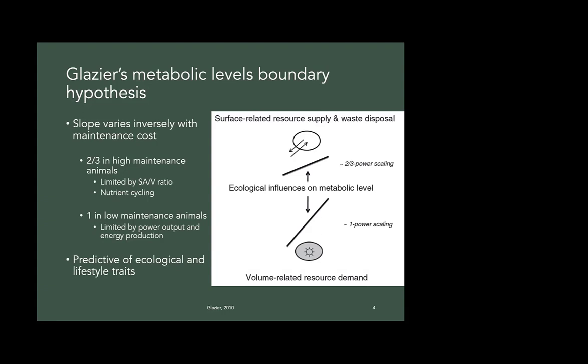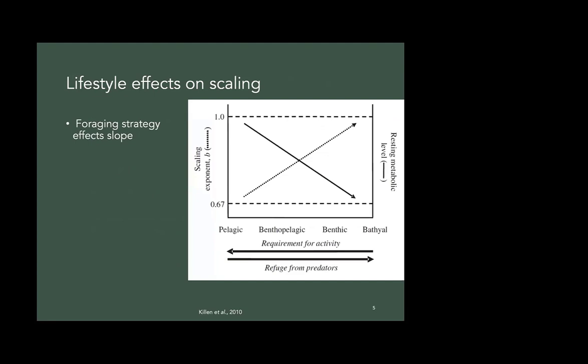And so this is predictive of ecological and lifestyle traits. Killen et al. in 2010 looked at a bunch of fish species and looked at foraging strategy and how it affects slope. So this graph has the scaling exponent, which is B here and the resting metabolic level. And in highly active fish or pelagic fish like tuna, they scale down here at the scaling exponent at 0.66 or 0.67, and they have a high resting metabolic rate. And then the reverse is true for benthic or more sedentary fish, with slope around one and a lower resting metabolic rate.